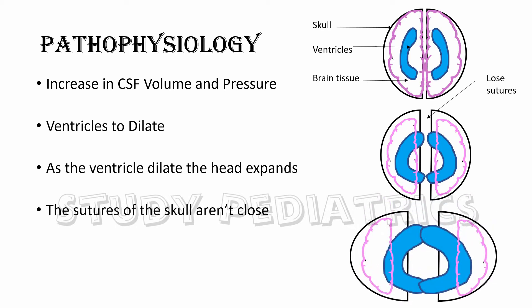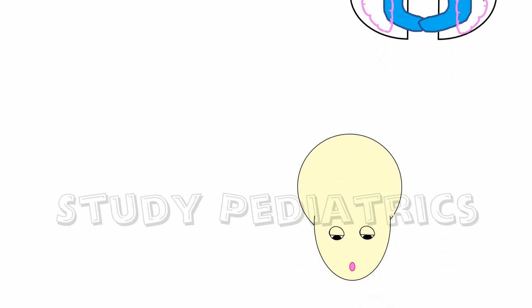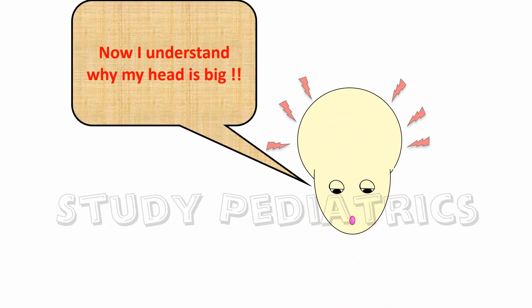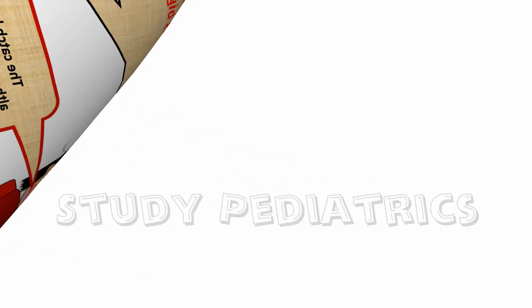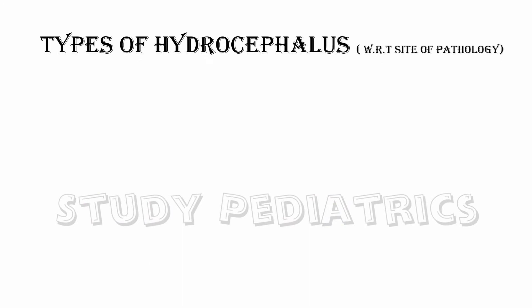In a growing baby, the sutures of the skull are not closed and are also loose, hence the head expands. Although the head size is big, the brain is of the same size as normal. Coming to the types of hydrocephalus.